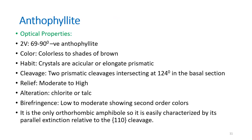Coming to the optical properties of anthophyllite: it is optically negative, and the 2V angle is 69 to 90 degrees. Its color is colorless, sometimes with shades of brown. Crystals are acicular, elongate, and prismatic. It exhibits two directions of cleavage in basal section at 56 and 124 degrees. Relief is moderate to high. It alters to chlorite or talc. Birefringence is low to moderate, and it shows second-order interference colors. It is the only orthorhombic amphibole, easily characterized by its parallel extinction relative to the 110 cleavage.